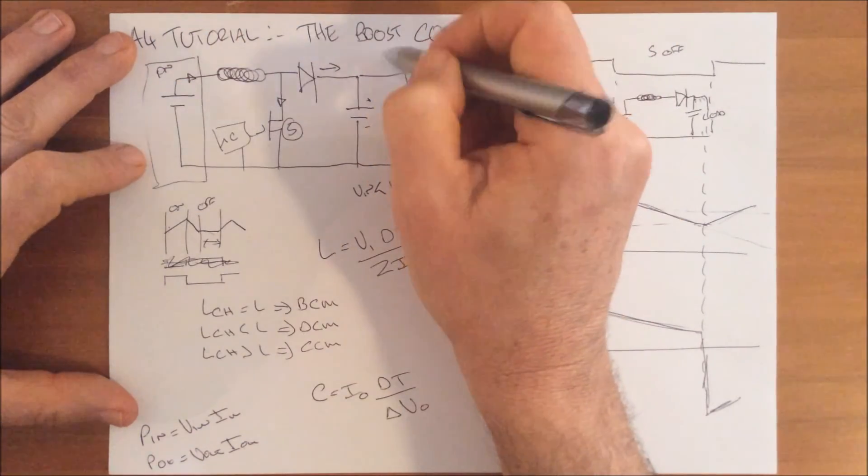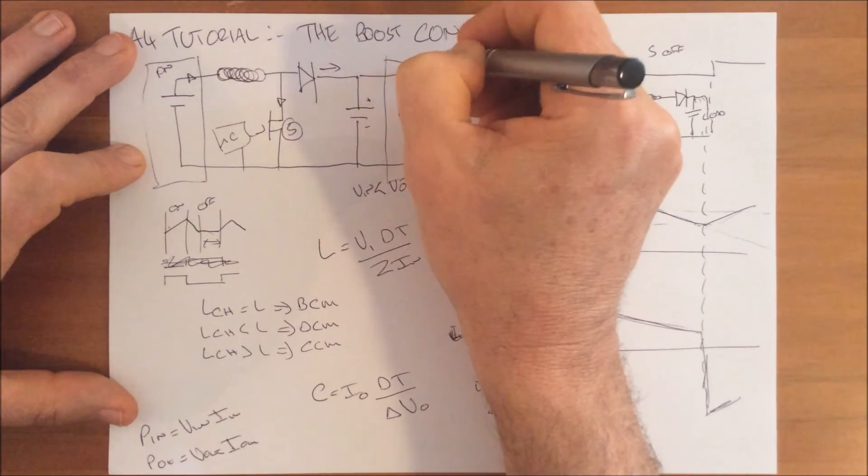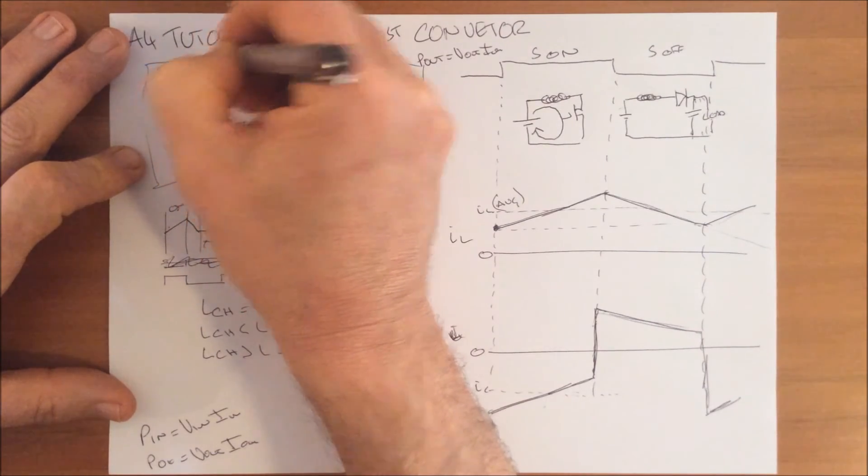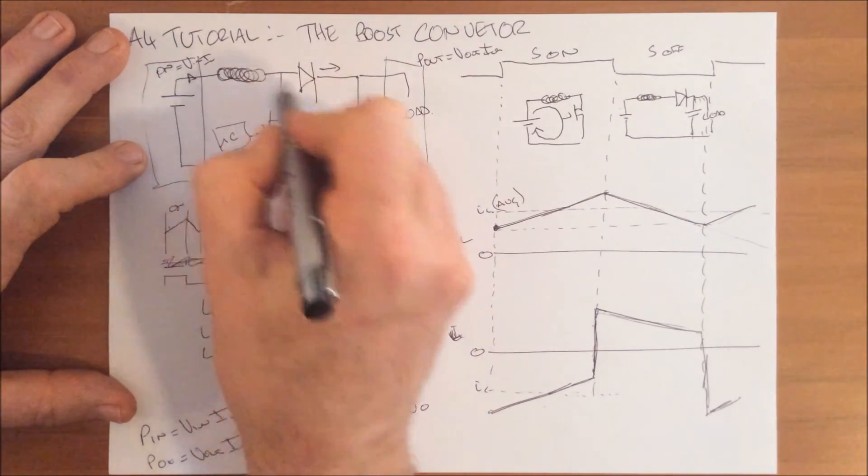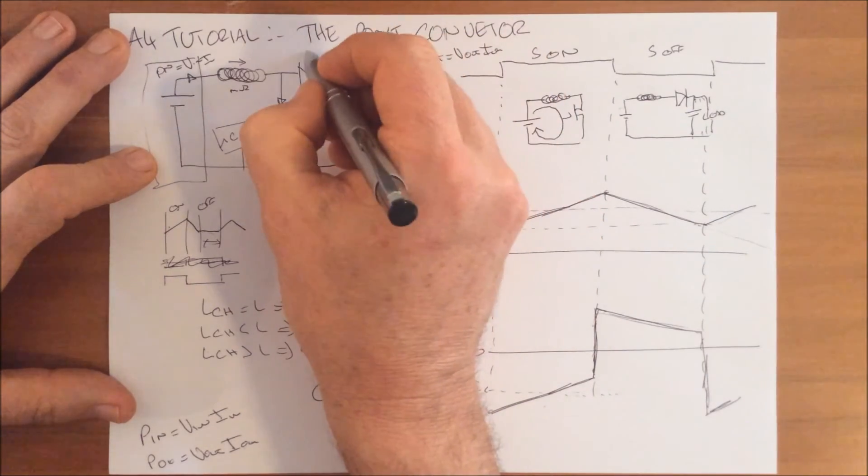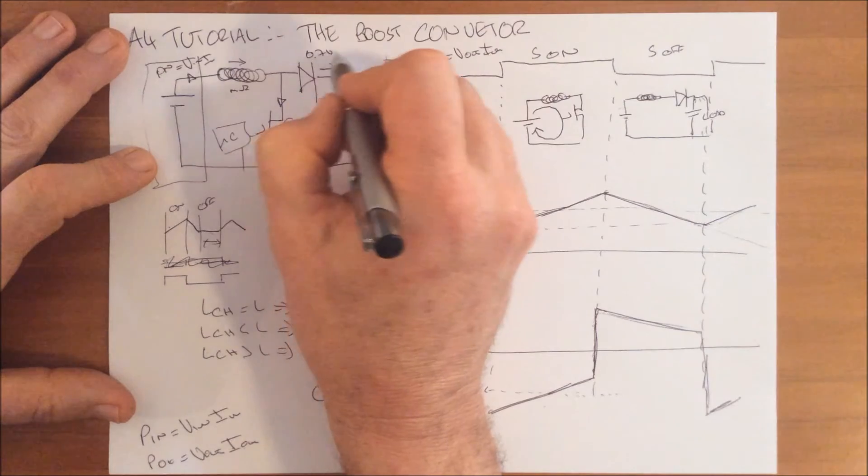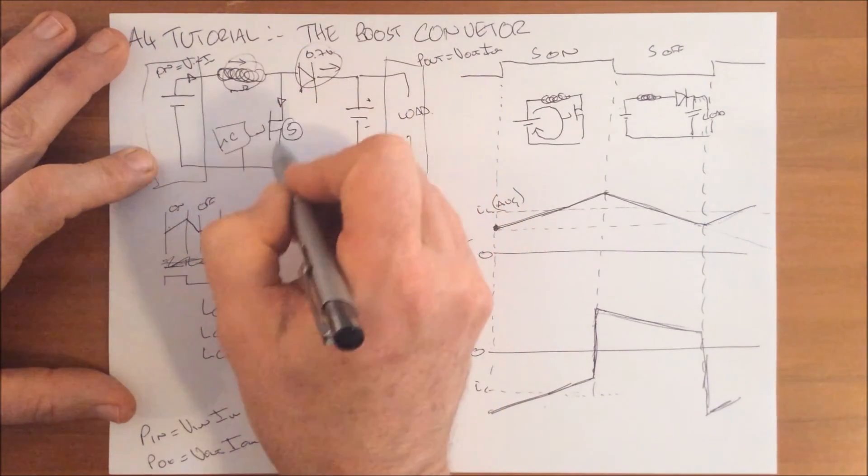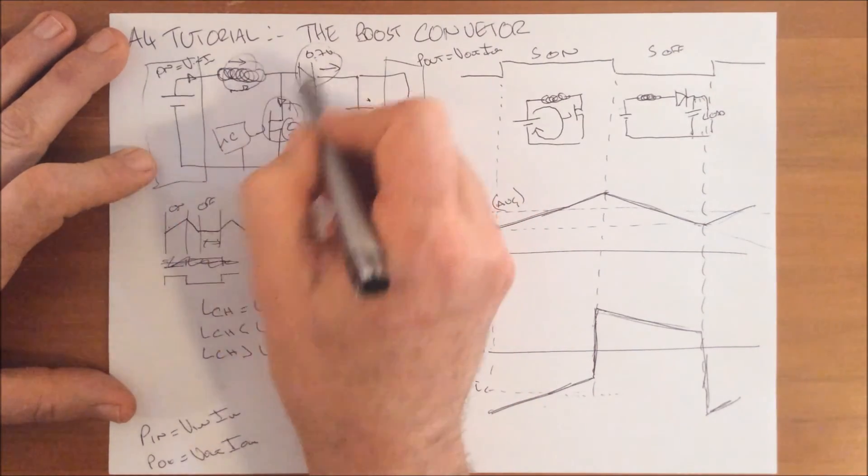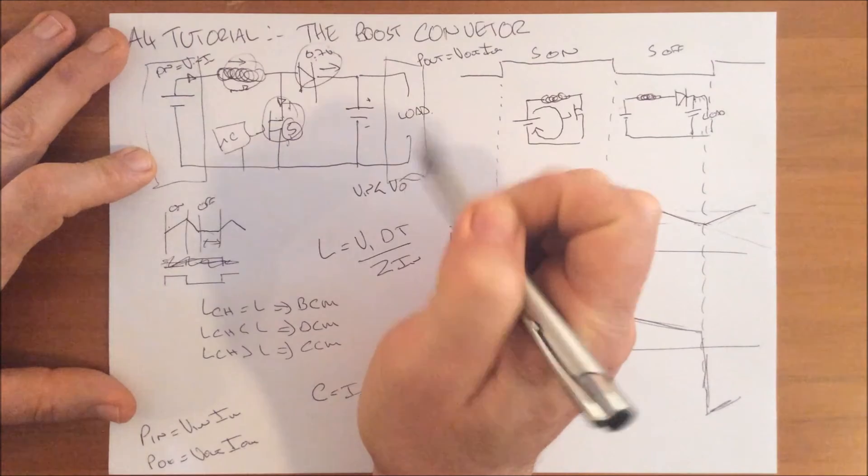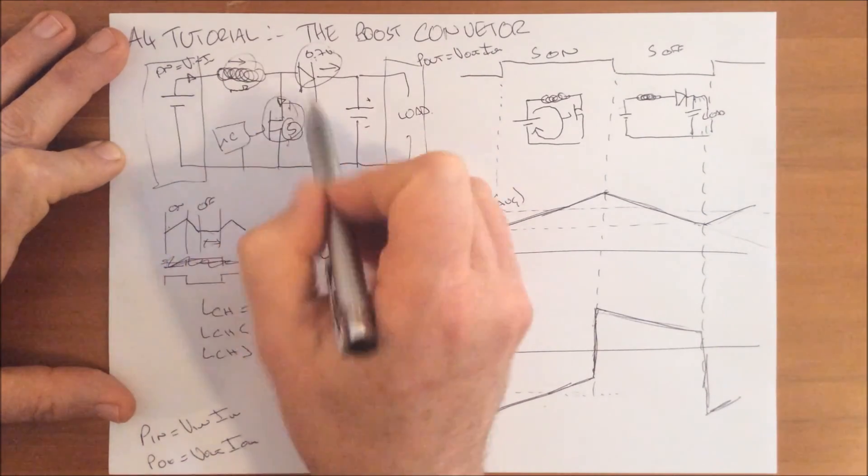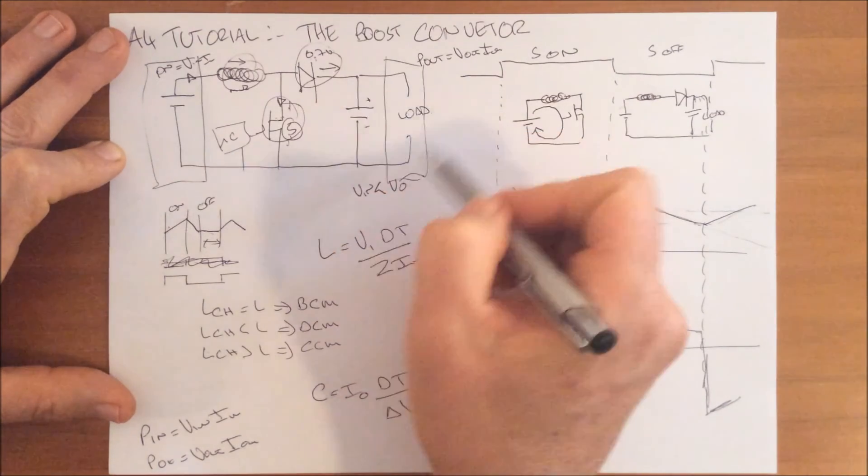Here's our input power, VIN times IIN, and here's our output power, VOUT times IOUT. PIN equals VIN times IIN. We are going to lose a little bit of energy through our inductor because this is going to have a couple of milliohms. We've got a 0.7 volt drop through the diode, so we lose power here. When the device is turned on, this has got a resistance between the drain and the source, so we lose a little bit of power here. If we put in say 100 watts here, we might lose say 5 watts, which means the maximum we're going to get out is 95 watts.